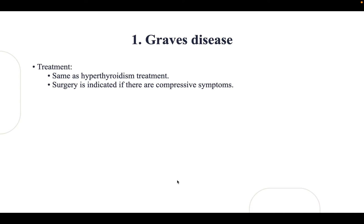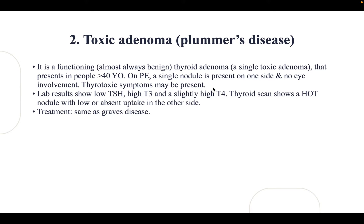Treatment of Graves' disease is the same as hyperthyroidism treatment; surgery is indicated if there are compressive symptoms on the eye. Toxic adenoma, or Plummer's disease, is a functioning, almost always benign thyroid adenoma — a single toxic adenoma presenting in people over 40 years old. On physical examination, there is a single nodule on one side with no eye involvement, though thyrotoxic symptoms may be present. Lab results show low TSH, high T3, and slightly high T4. The thyroid scan shows a hot nodule on one side and is absent on the contralateral side.